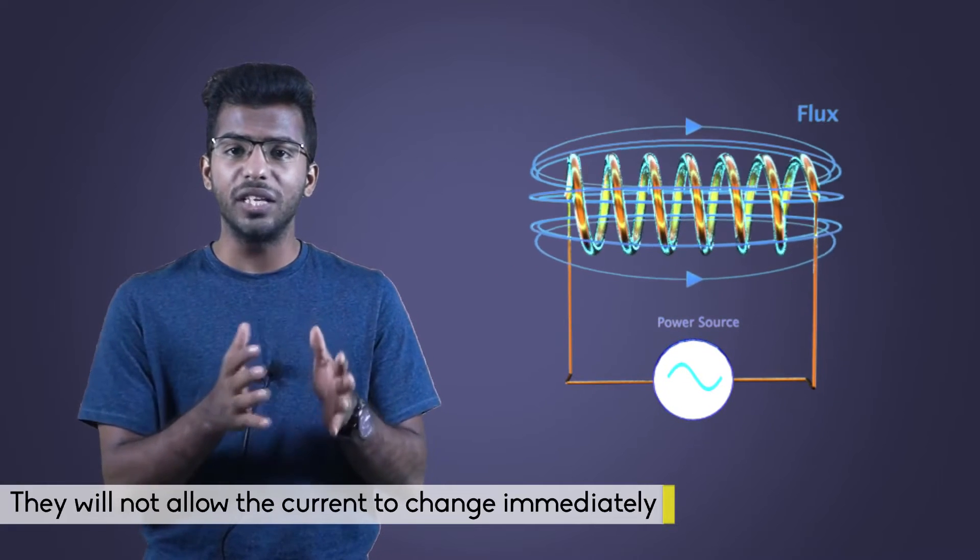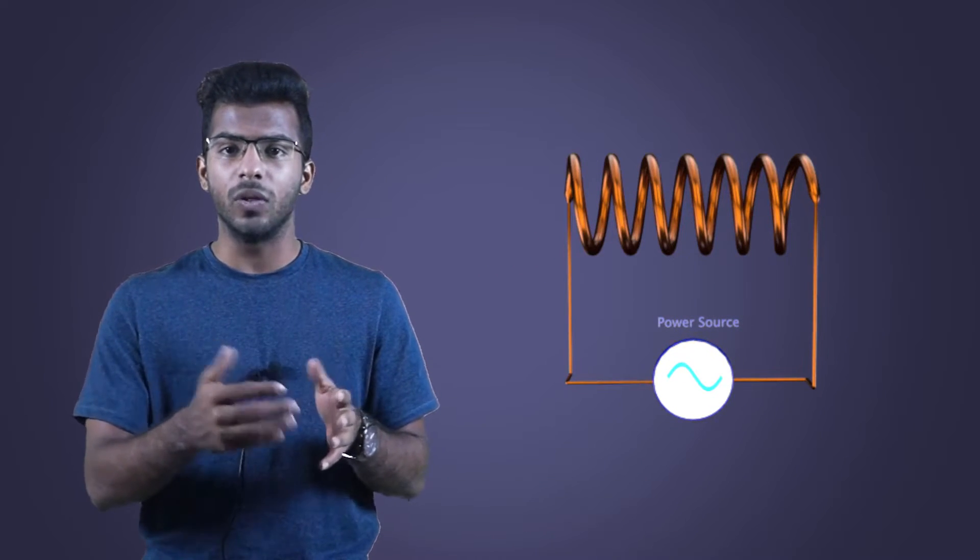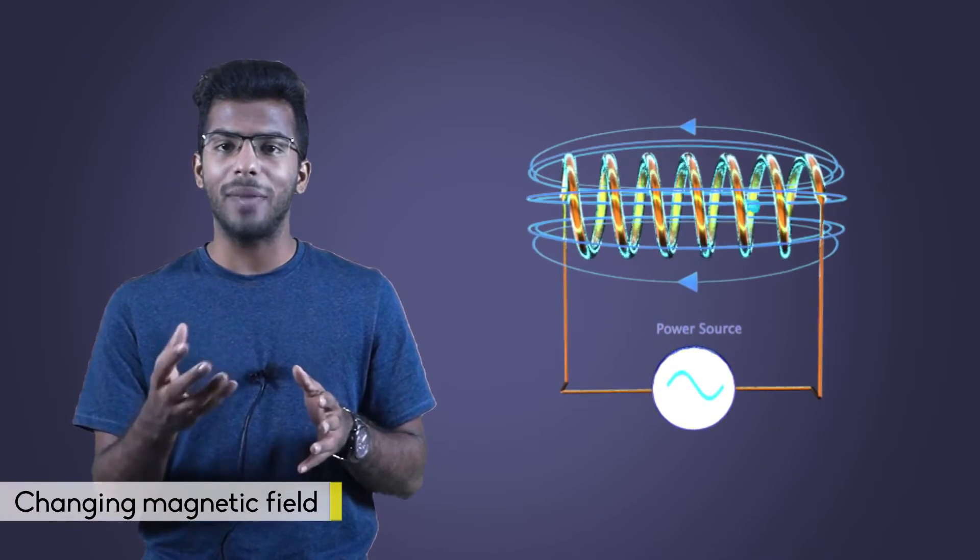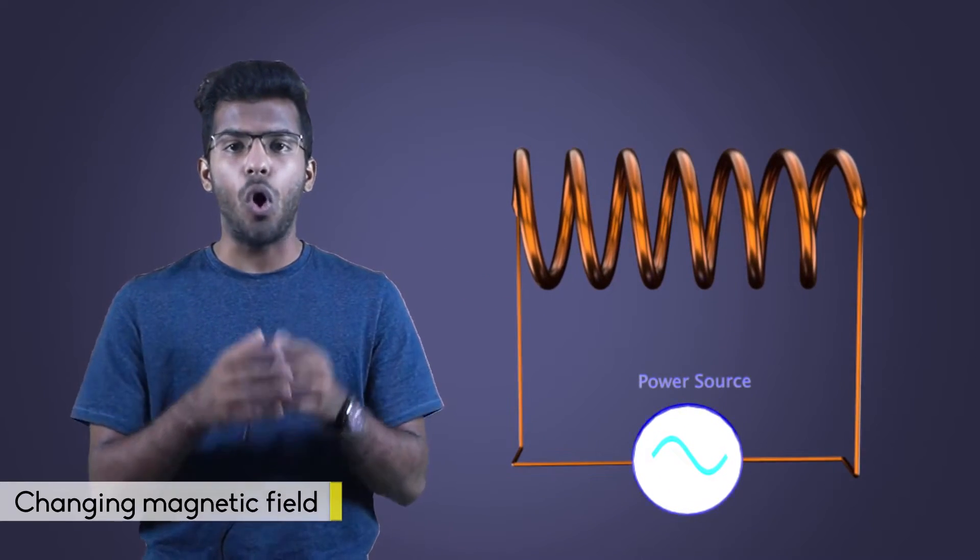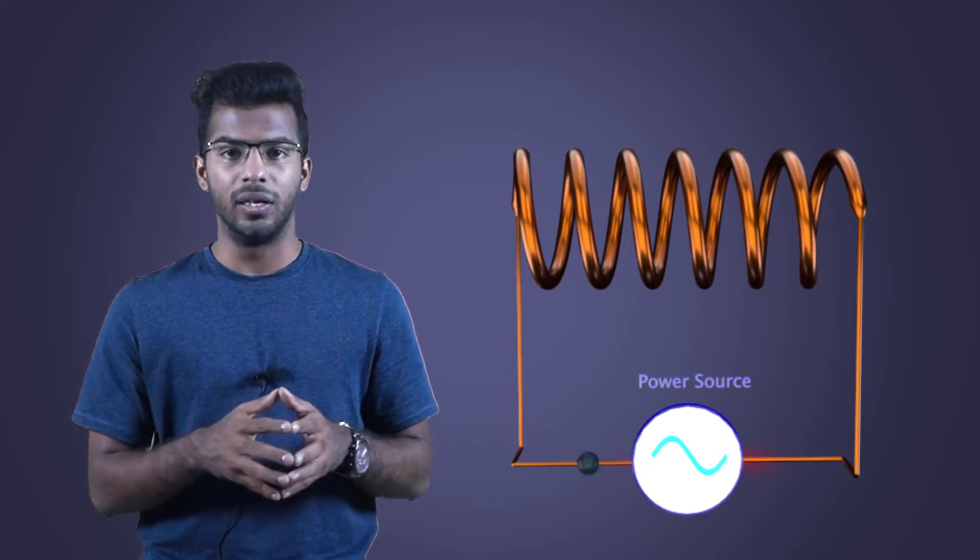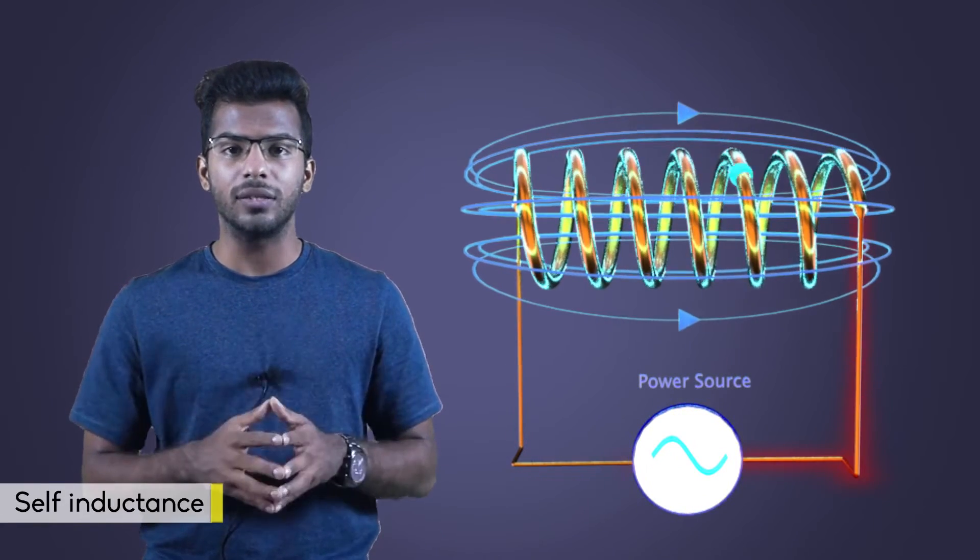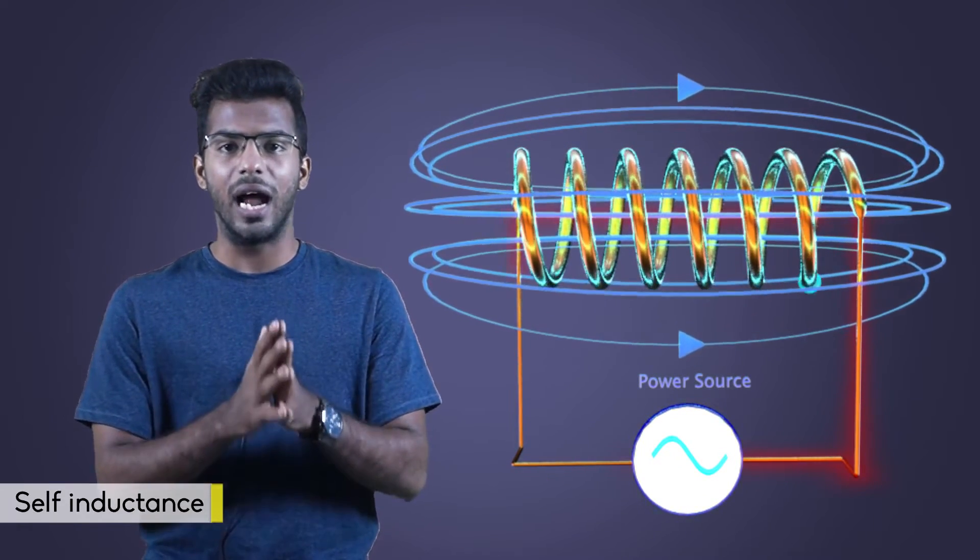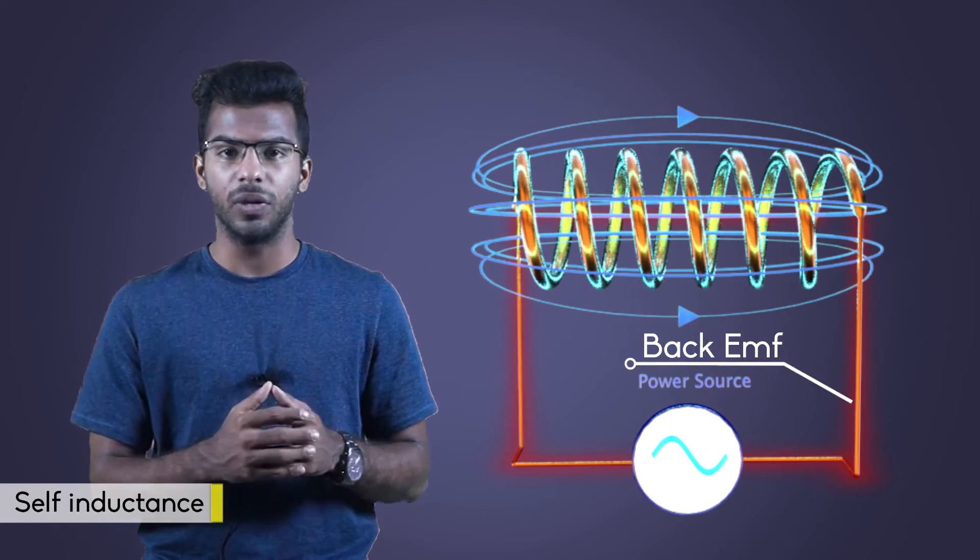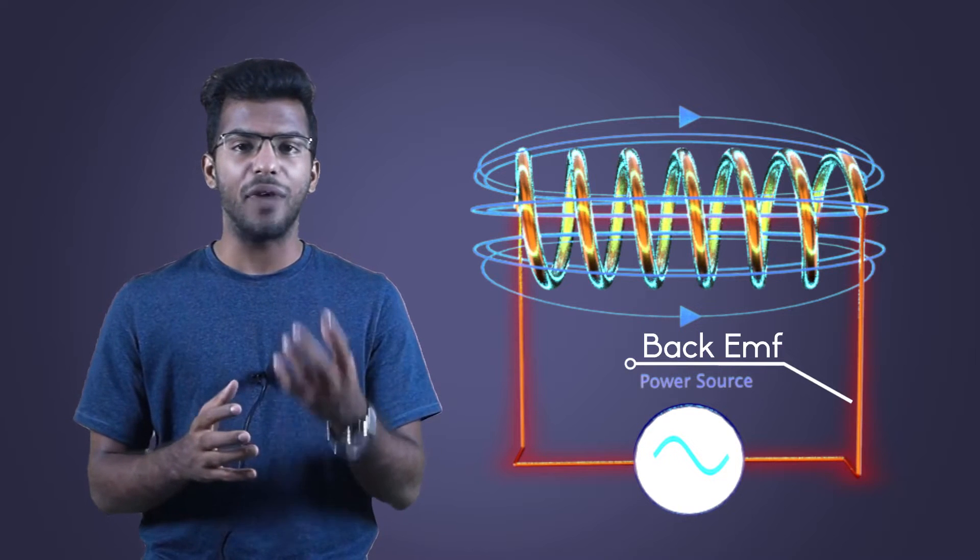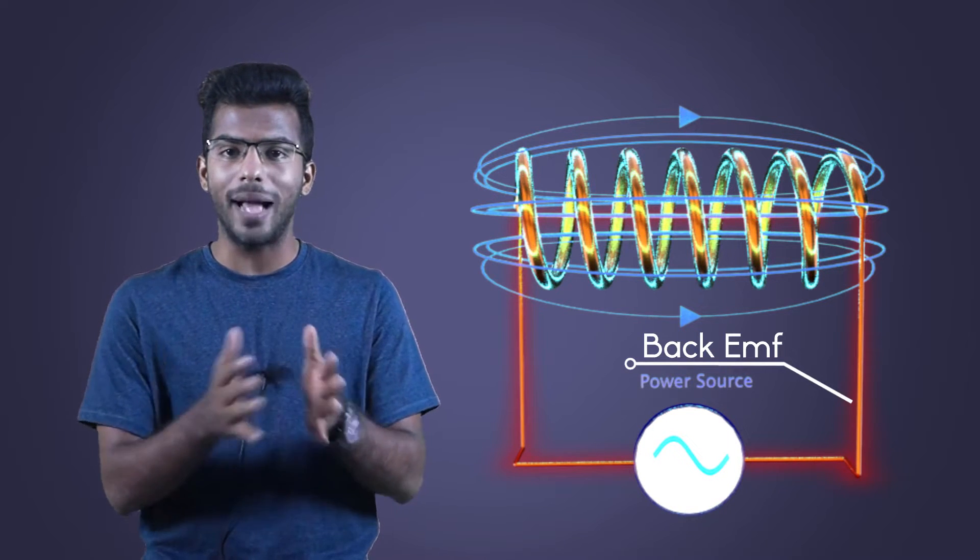Because when there is a change in current flowing through them, they produce a changing magnetic field. Due to this changing magnetic field, there will be an EMF or voltage in the coil. This phenomenon is known as self-inductance and the EMF produced is called back EMF. This is according to Faraday's law of electromagnetic induction.